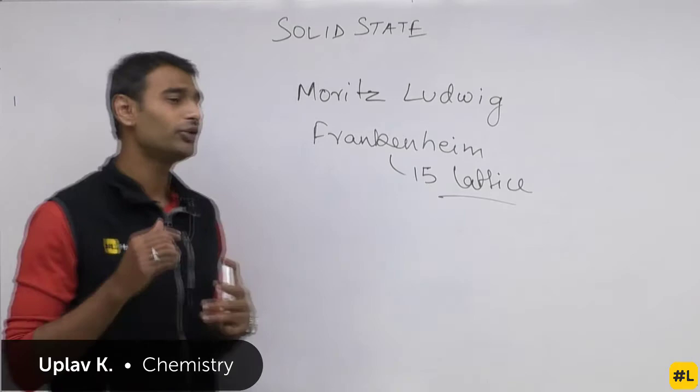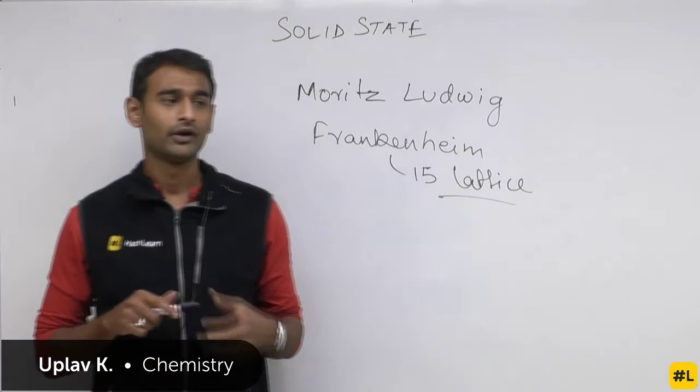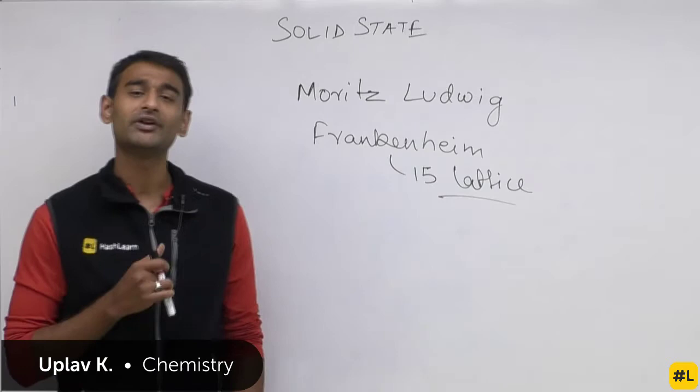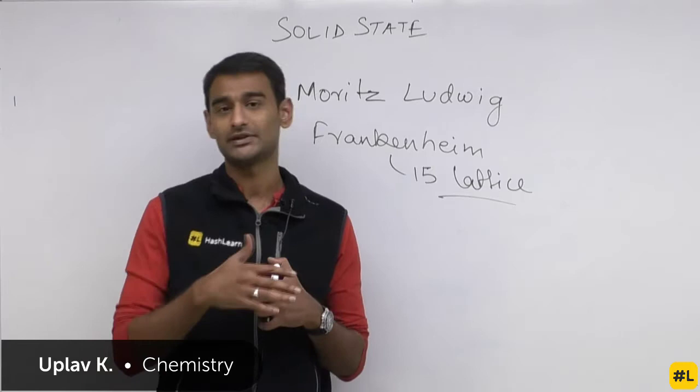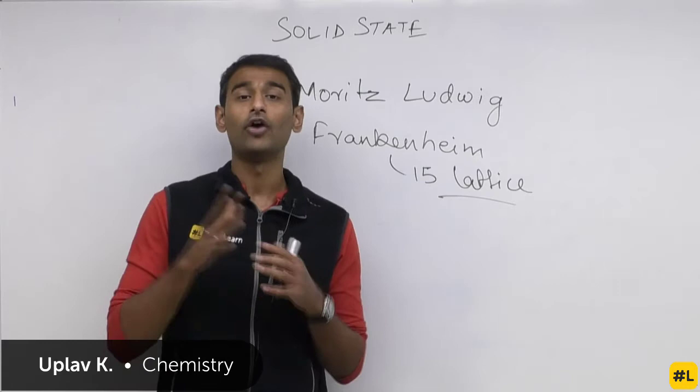Let us do a quick recap of what we did in the previous class. We were talking about X-ray diffraction — what are X-rays, that X-rays are a type of electromagnetic waves. What is diffraction? Diffraction is when light bends at the edges. Now, if the two waves are in phase they undergo constructive interference; if they are out of phase they undergo destructive interference.